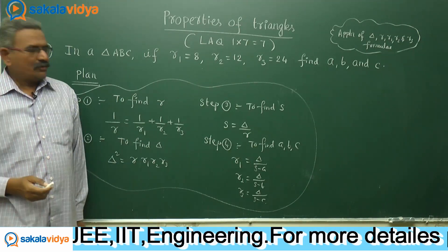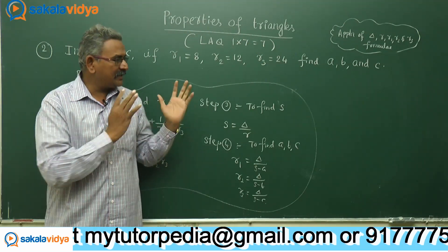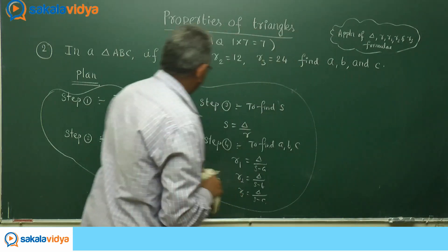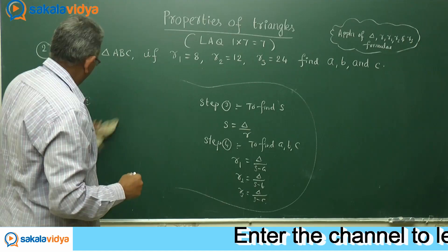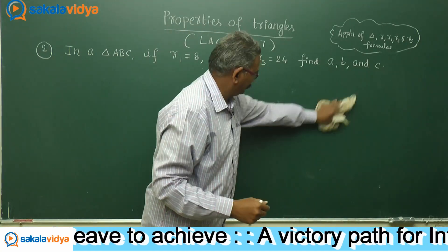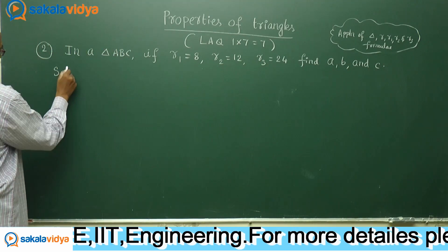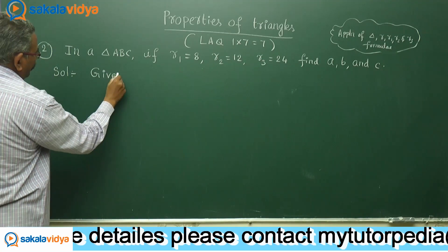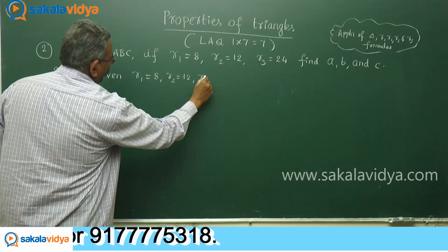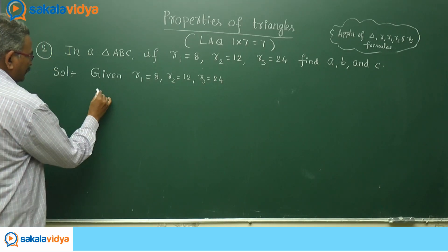If you execute this planning, definitely we get the a, b, c values. This is called the problem-solving techniques. Now let us solve it. Given R1 equals 8, R2 equals 12, R3 equals 24. Step 1: we have to find out r value.